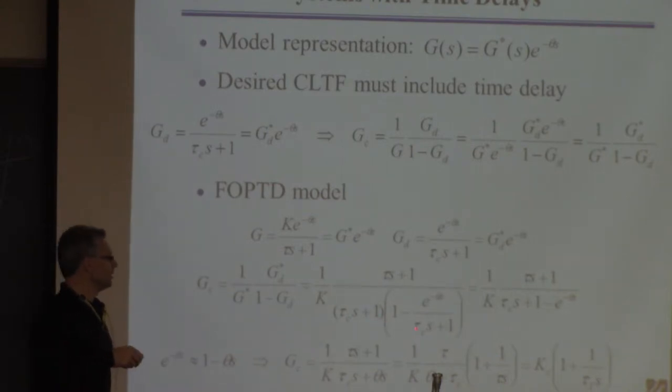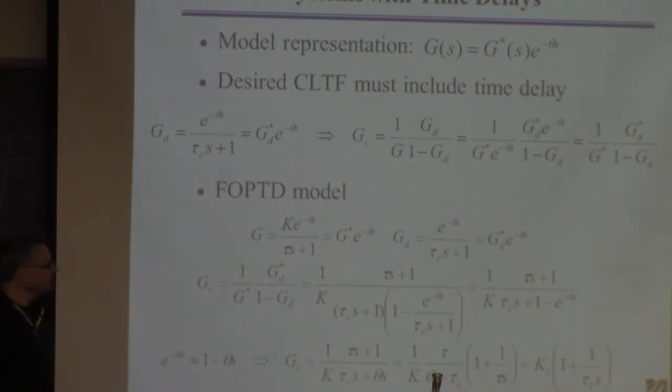If you simplify that by multiplying across—actually this will be quite easy. Just multiply (tau_C * s + 1) here in both of these terms, you'll get this thing here. The idea is, what the heck is this thing? This is a gnarly looking thing.